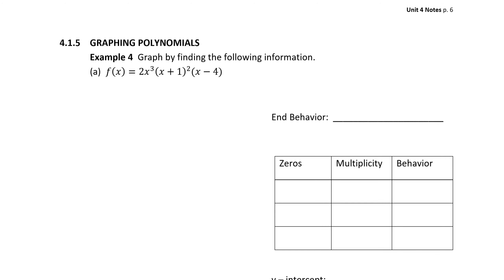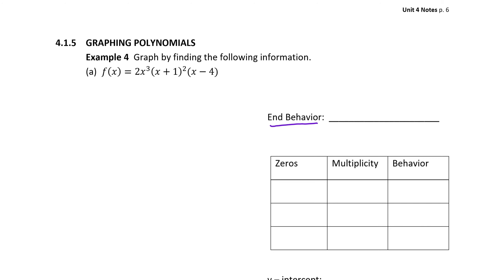Our function is f(x) = 2x³(x+1)²(x-4). Let's determine the end behavior, which is given by the leading power function. Since this polynomial is in its multiplied-out form, we can't just look at it to determine the leading power function. We have to anticipate what the highest-powered term would look like. Notice our leading coefficient is 2, and the shortcut is to sum the exponents on each factor: 3 plus 2 plus 1 gives 6. So the highest-powered term would be 2x to the sixth.